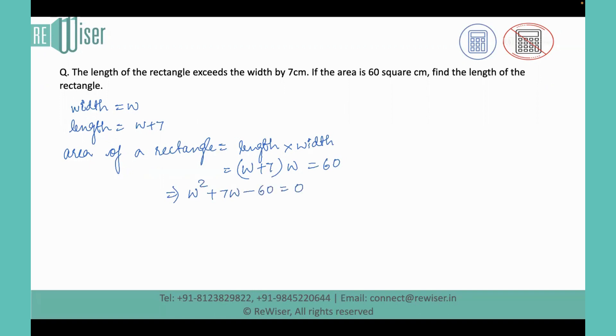To calculate the length, we need the value of the width. We need to solve this quadratic equation to find its root. Now what is the way by which we can find the roots? First method we can apply is the formula method. Root can be calculated as minus B plus minus root B square minus 4AC upon 2A. Another method is applying middle term factorization.